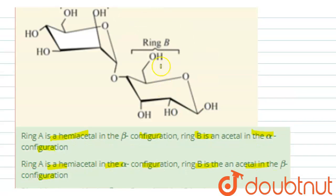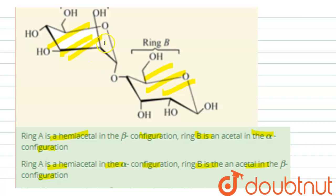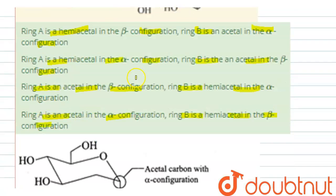So, here ring A is this one and ring B is the other one, as given. You have to determine two things: which one is acetal and which one is hemiacetal, and then which one is in alpha configuration and which one is in beta configuration — then you can answer the question.